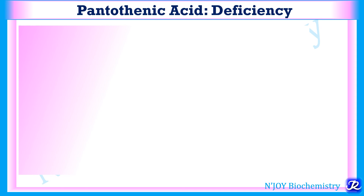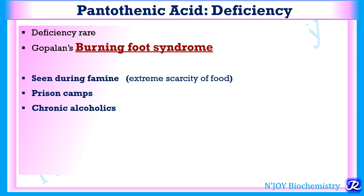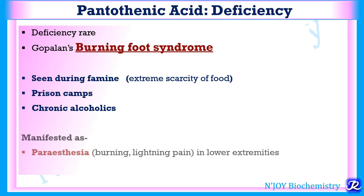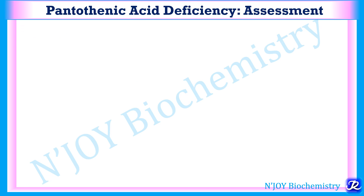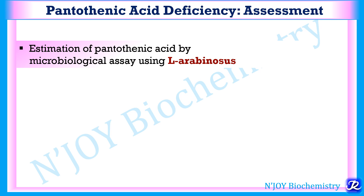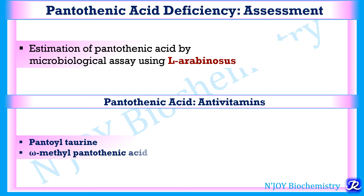Pantothenic acid deficiency is very rare. When it occurs, it leads to Gopalan's burning foot syndrome, seen during famine, in prison camps, and in chronic alcoholics. It manifests as paresthesia — burning, lightning-like pain in the lower extremities — and a staggering gait due to impaired coordination. Deficiency can be assessed by microbiological assay using L-arabinosus. Anti-vitamins of pantothenic acid include pantoyl taurine and omega-methyl pantothenic acid.